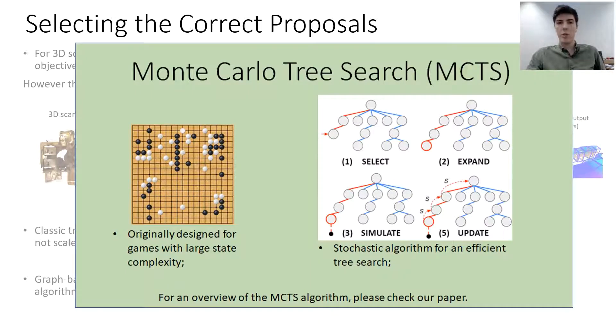We propose to adopt Monte Carlo Tree Search, or MCTS, to perform 3D scene understanding and select the objects and the walls proposals. Originally, MCTS was designed to learn to play games with large state complexities, but it is a general tree search algorithm. Because of its stochastic nature, MCTS scales well with the complexity of the problem and can optimize non-differentiable functions.